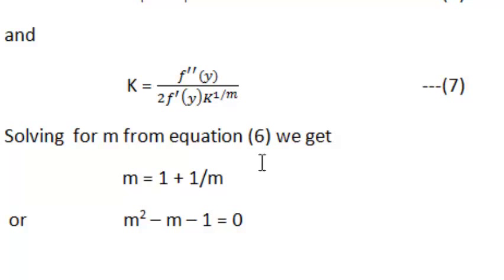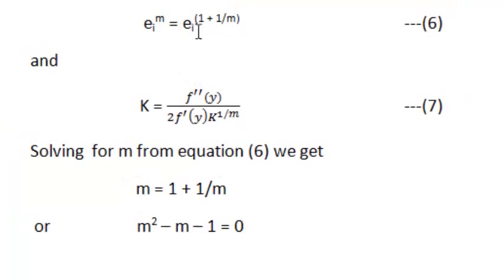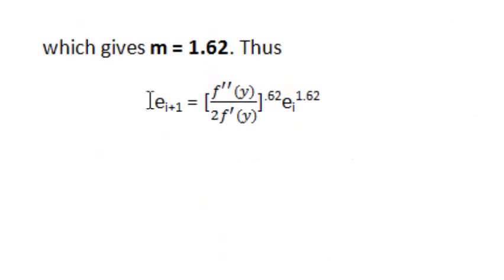Solving for m from equation 6, we write m equals 1 plus 1 by m. This leads to the quadratic equation m squared minus m minus 1 equals 0, with the solution m approximately equals 1.62. Here m is the order of convergence of the secant method. On writing this value back into the previous equation we can obtain the final result. Thank you.